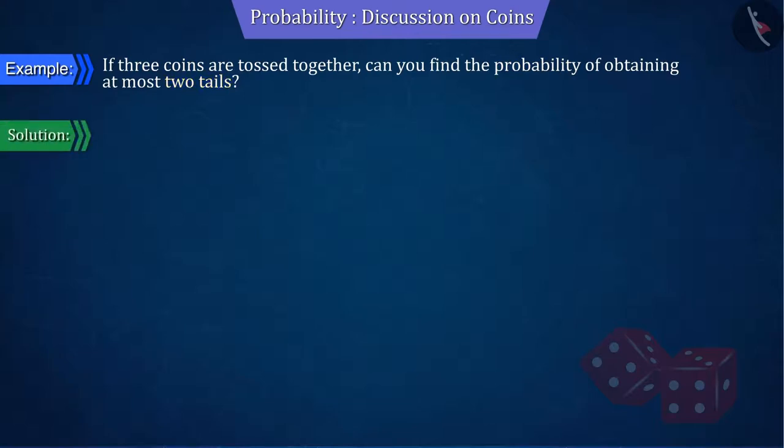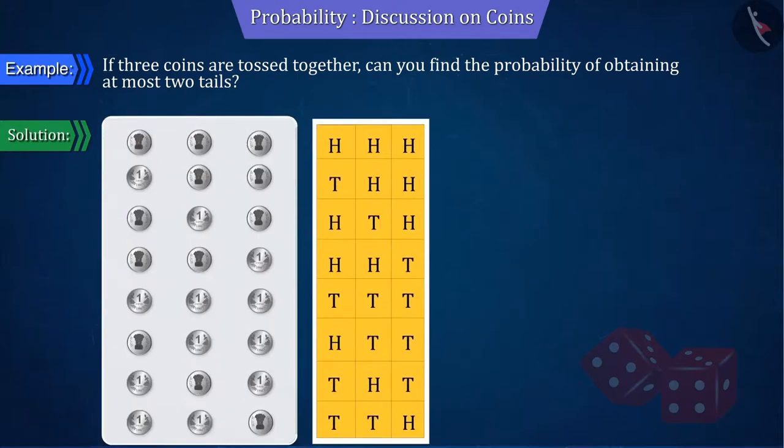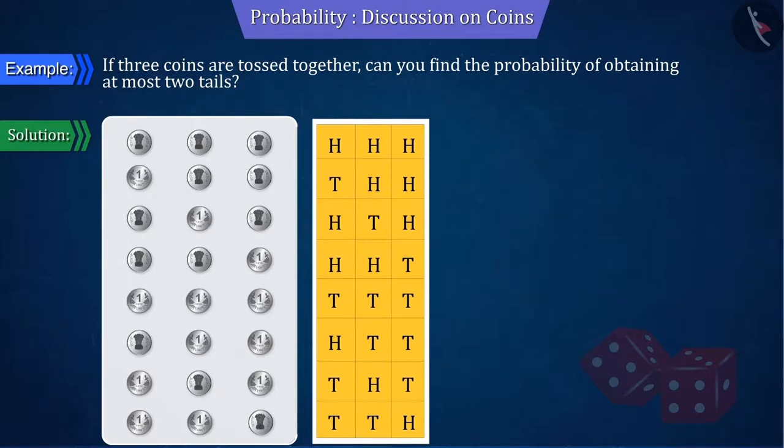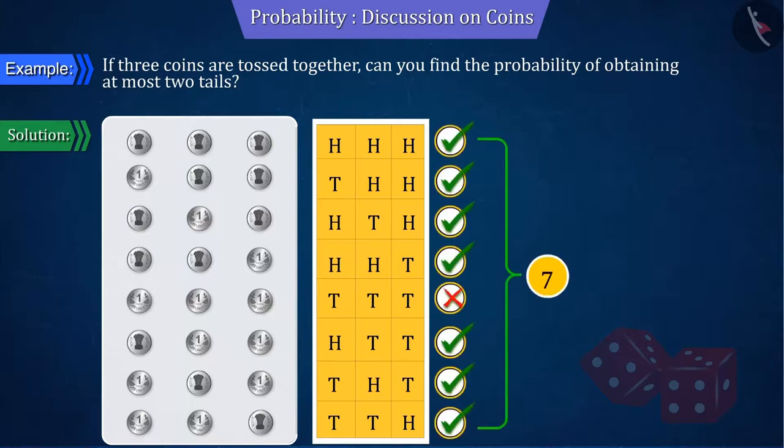As we know that when three coins are tossed together, the following results are obtained. From the results obtained, we can observe that there are a total of seven outcomes to obtain at most two tails favorable to the event.